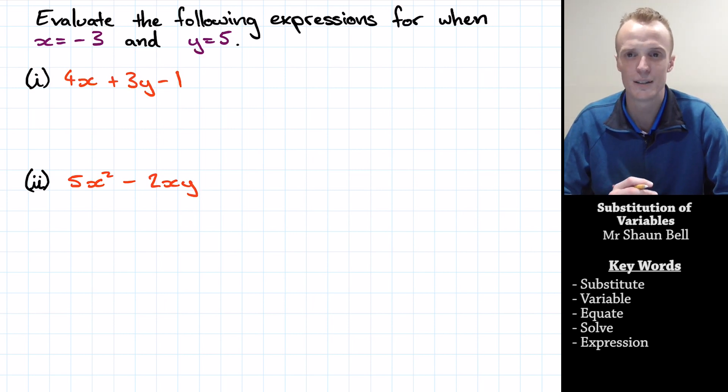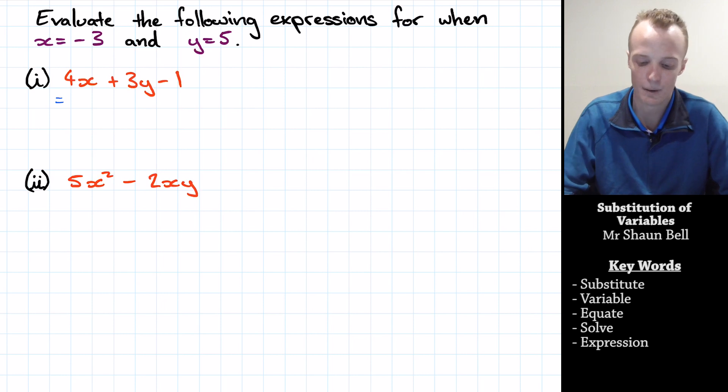Now remember, our first step is to rewrite the expression by replacing the x value wherever we see it with negative 3. Remember to include those brackets. So that's plus the y value of 5. And once we've done that, we evaluate it.